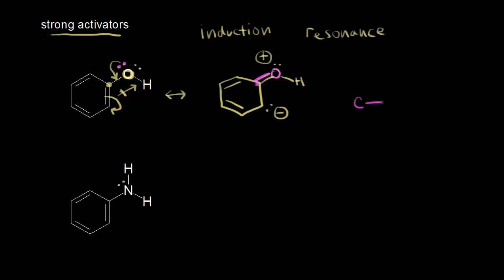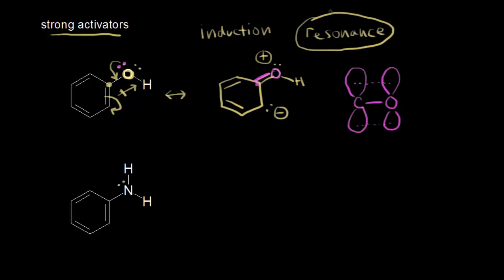We get overlap of p orbitals between this carbon and this oxygen. Since carbon and oxygen are in the same period on the periodic table, their p orbitals are pretty much the same size, meaning you get good overlap. Therefore, the oxygen is able to donate some electron density to that ring — the lone pair of electrons on the oxygen is conjugated into the pi system of the ring. That's overall an electron donating effect; you're increasing the electron density in the ring. So the resonance effect says that the OH group is an electron donating group, which makes it a strong activator — and that's what we observe experimentally. The resonance effect beats the inductive effect when an atom with a lone pair of electrons is next to your benzene ring.